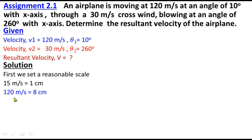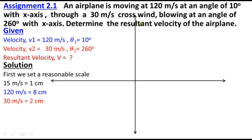If 15 meters per second is 1 centimeter, then 30 meters per second is obviously 2 centimeters. Now we have to draw it. For that reason, we will plot the Cartesian coordinates and then put a protractor.